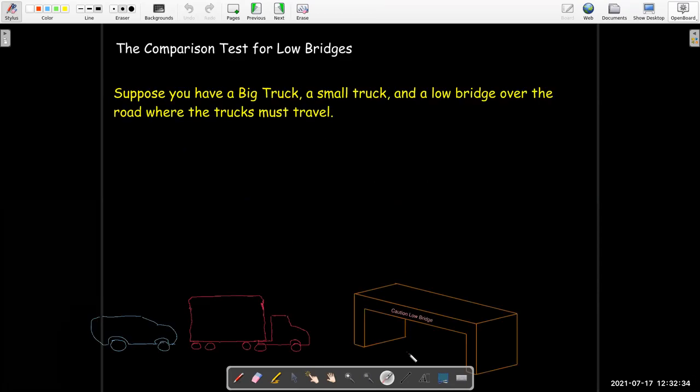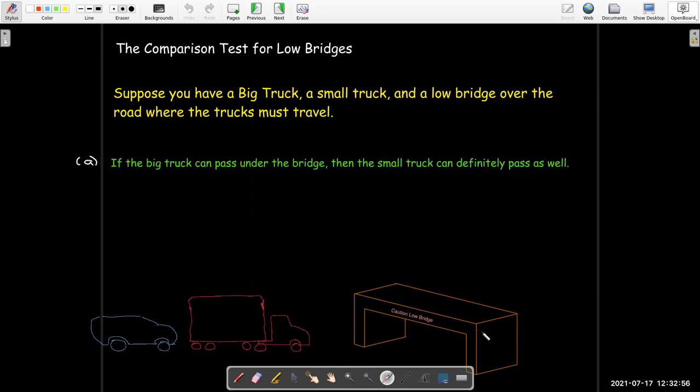And let's review this comparison test for low bridges, which we talked about when we did the comparison test for integrals. The same logic holds true. I've got a big truck, and I've got a small truck. I've got a low bridge that they need to go under. Well, what can I say? You're thinking about going under the bridge, meaning being convergent. If the big truck can pass under the bridge, then the small truck can definitely pass as well.